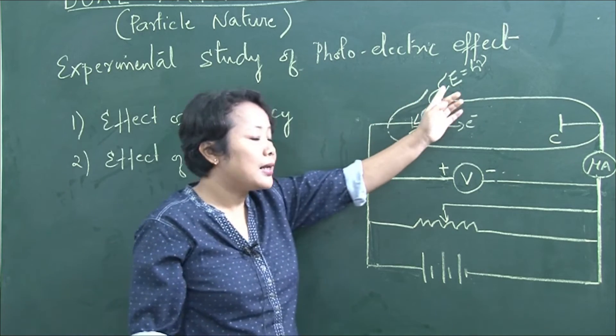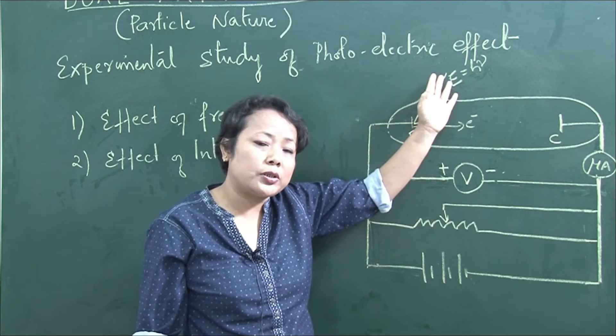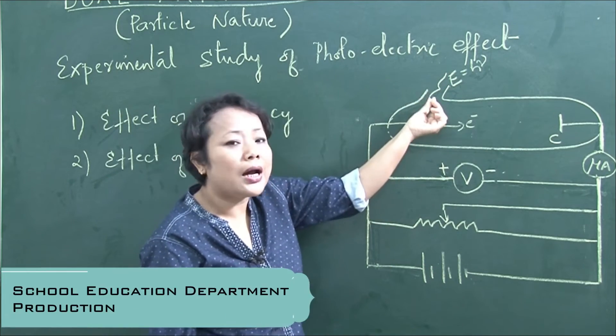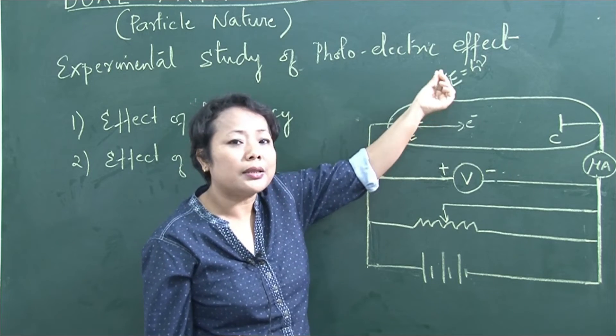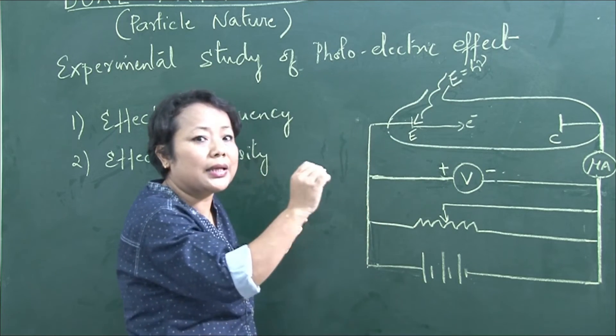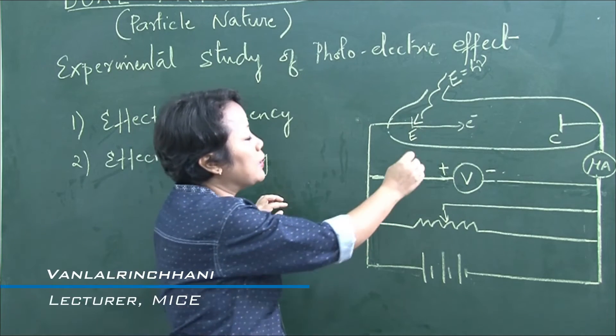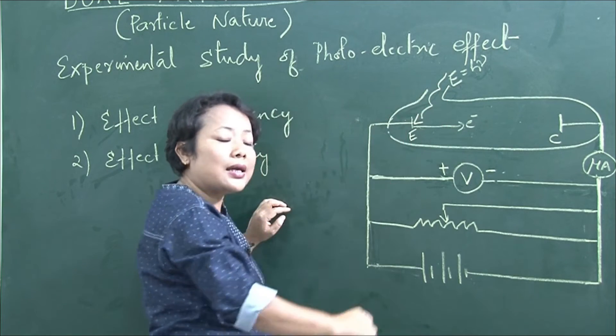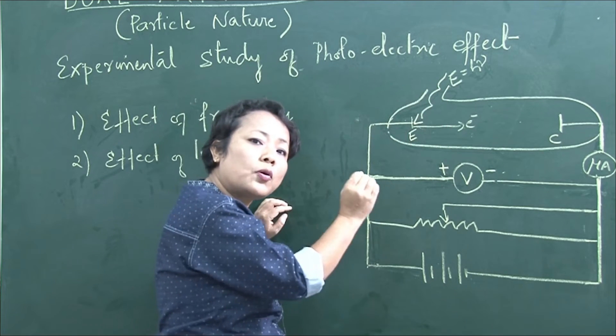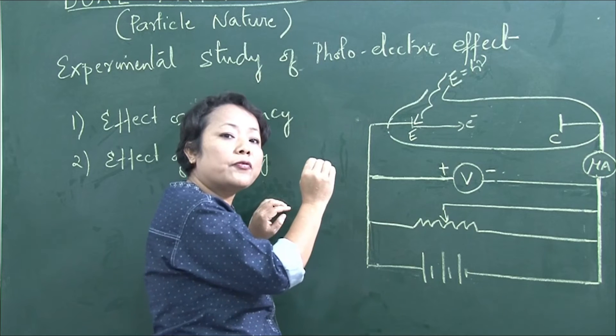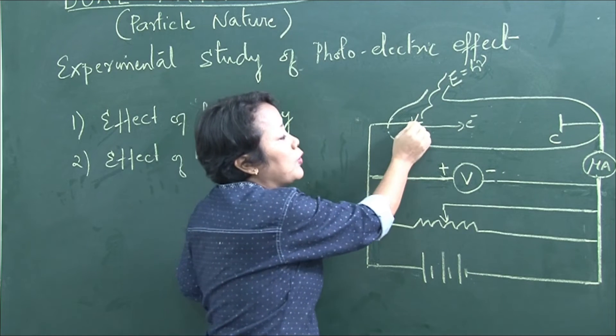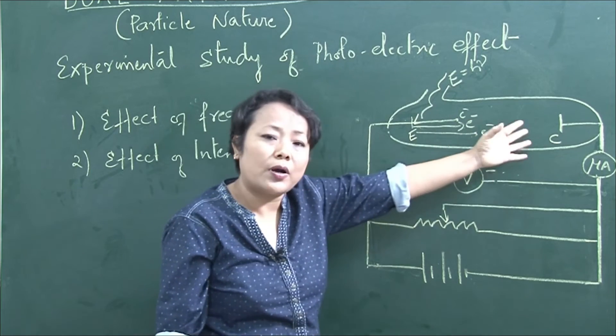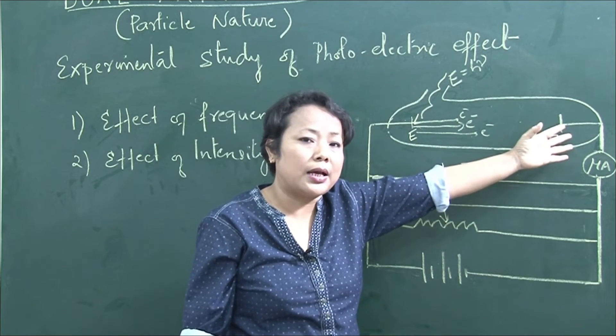Effect of intensity: When the light energy intensity increases, the number of photons increases. This means more electrons are emitted. The intensity affects the number of photoelectrons but not their individual energy.